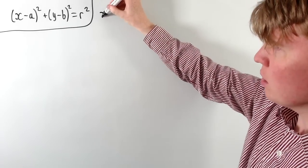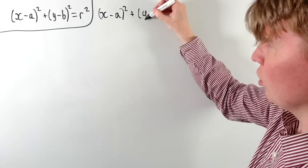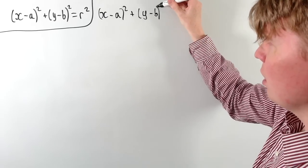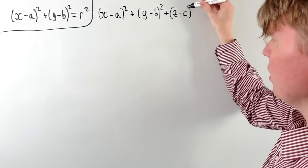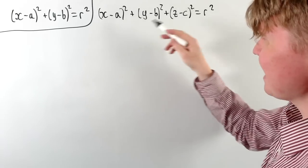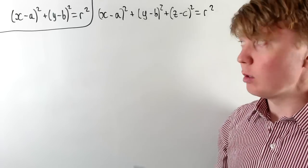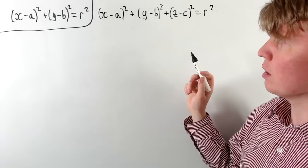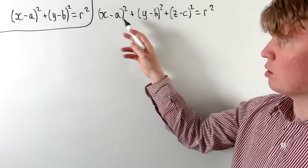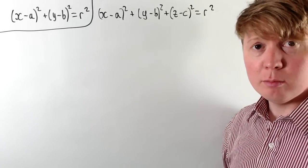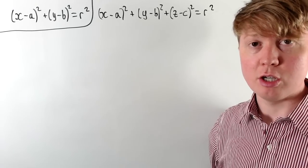If we try and do the same thing but in 3D, let's just add in a z coordinate and we'll add c to our centre. In 3D, you can imagine taking square roots again — you'd get all of the points (x, y, z) which satisfy this equation would be a fixed distance from this new centre (a, b, c). But unfortunately in 3D this defines a sphere rather than a circle.